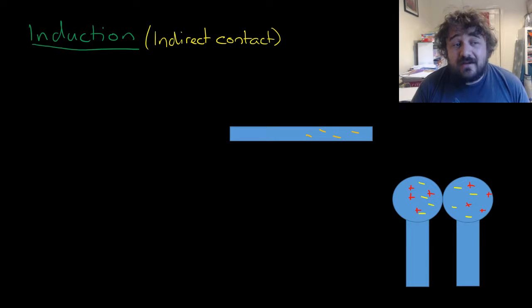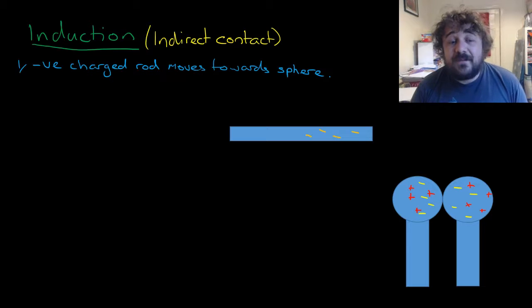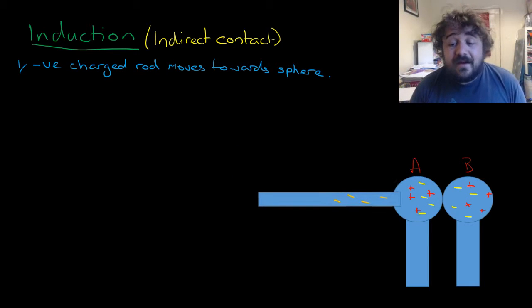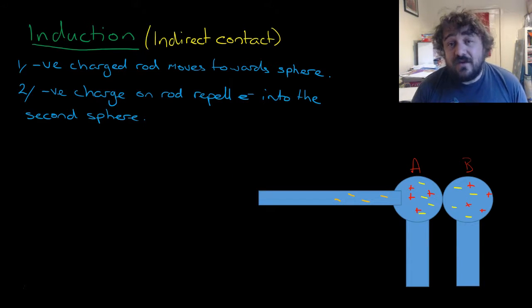Now we can use indirect contact or induction. So basically here we have a negative charged rod is moving towards a sphere, and I'm just going to write a letter above this one, so we'll go A. So it's moving to sphere A. And when it does that, the negative charge of the rod will repel these electrons here into the second sphere, so into sphere B. So the electrons will be repelled into the sphere that is also touching. So it's two metal objects, neutral charge. You bring a negative charged object to it, and that will repel the electrons away. Now see they move into sphere B.